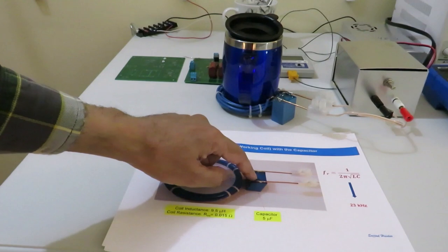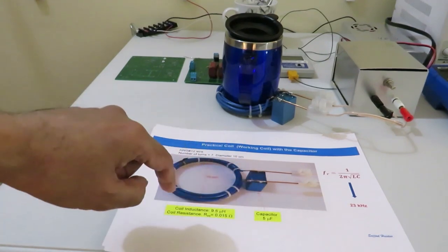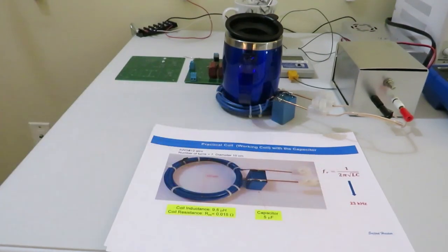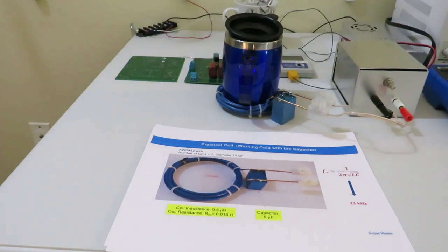This is the practical coil that is used to heat the mug. A capacitor and the coil. And the resonant frequency is shown 23 kilohertz.